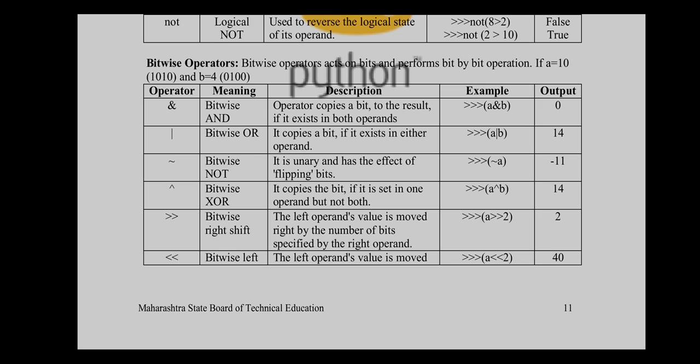For bitwise XOR, use the caret (^) operator. It copies a bit if it is set in one operand but not both, effectively showing the uncommon items of two sets. Bitwise XOR is also used for symmetric difference, similar to how the minus operator is used for set difference. Bitwise right shift and left shift are also available.